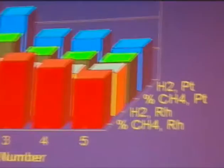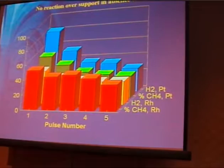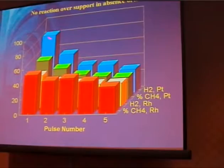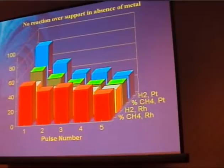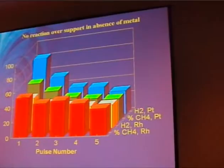There's no reaction over the support — if you put methane over the support material nothing much happens. If we put it over the catalysts, the red here is the percentage conversion of methane over the rhodium, the yellow is the amount of hydrogen produced, and similarly for platinum in green with hydrogen in blue. You can see there's a fair amount of conversion — about 50% — and it starts to decay, though not as fast as you might expect. This is still quite reasonable activity.